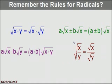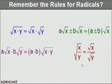The final rule for radicals is the quotient property. When we take the square root of x divided by y, that equals the quotient of two radicals. And just like the product property, this can also go in the other direction — if we have the quotient of two radicals, we can rewrite it as one square root.